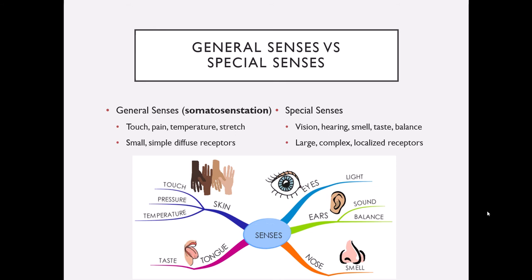The general senses, falling under the umbrella of somatosensation, include things like touch, pain, temperature, and body stretch. Our special senses — some of which we're familiar with, like vision, hearing, smell, and taste — also include balance, which is the one you never say as a little kid. Special sense organs tend to be larger, more complex, and more localized. For instance, in our eyes we have receptors for vision; in our ears, receptors for hearing and balance; in our nose, receptors for smell; and on our tongue, receptors for taste.